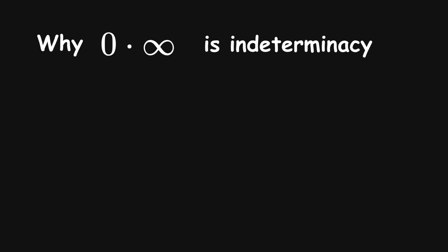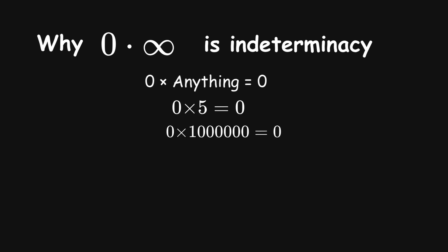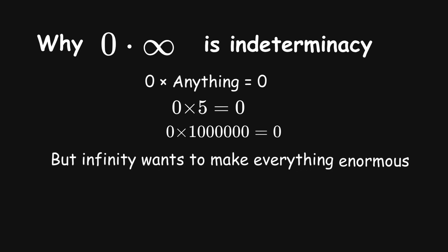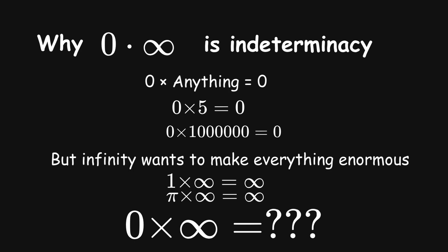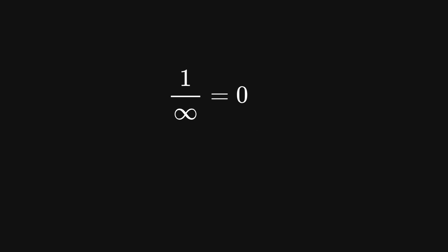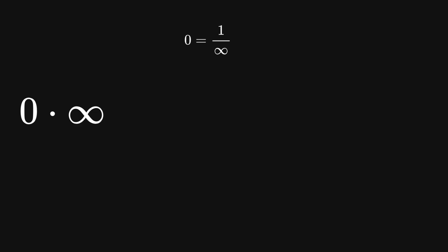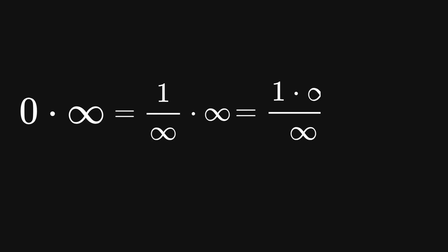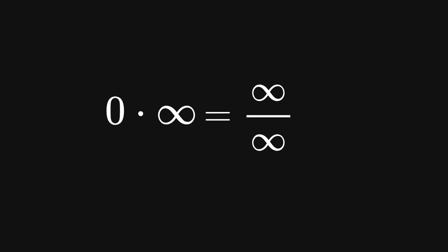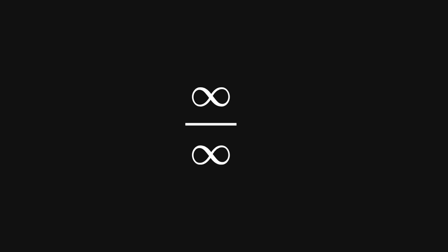Think about why this makes sense: 0 wants to make everything disappear — 0 times anything should be 0. But infinity wants to make everything enormous. When these two opposing forces meet, mathematics itself can't decide what should happen. Now, we established that 1 over infinity equals 0, so we can substitute 0 as 1 over infinity into 0 times infinity, giving us 1 over infinity times infinity. This simplifies to infinity over infinity — so 0 times infinity equals infinity divided by infinity, which is also a mathematical indeterminacy.